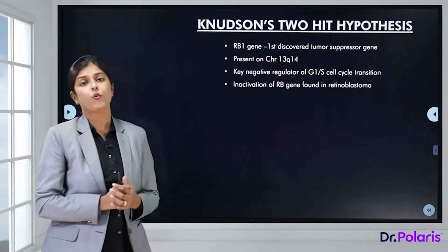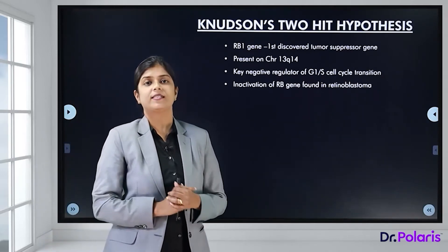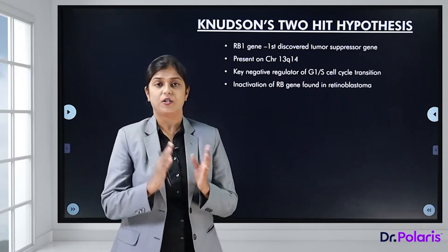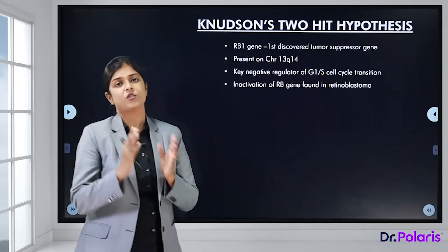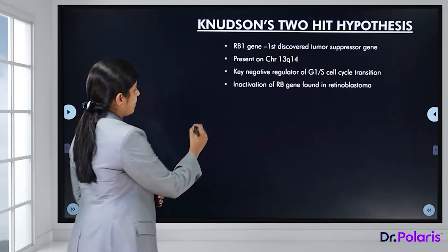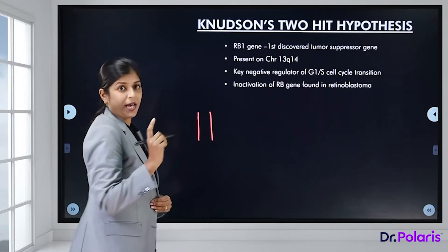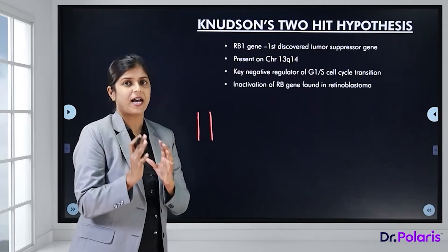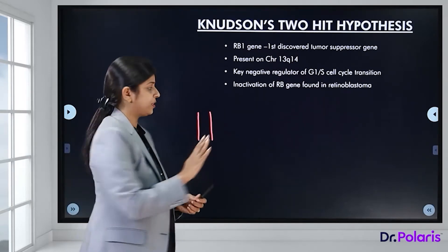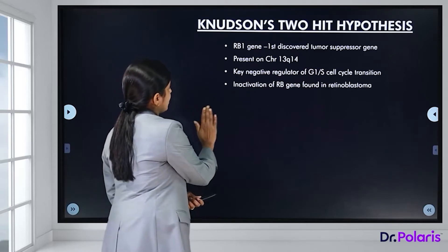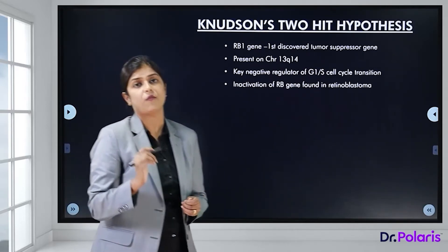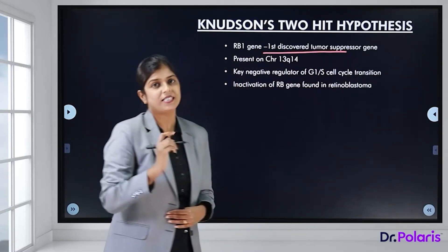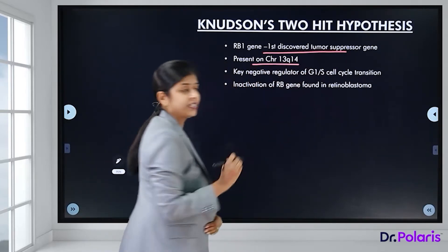Now coming to Knudson's two-hit hypothesis, proposed by Sir Alfred Knudson, an American scientist. He proposed that for any tumour suppressor gene to be inactivated, both alleles need to be mutated for a phenotypic change. So if the tumour suppressor gene has two alleles, both have to be mutated for the tumour to happen. The retinoblastoma gene, RB1, is the first discovered tumour suppressor gene and is located on chromosome 13q14.